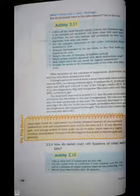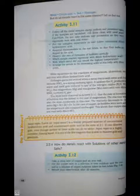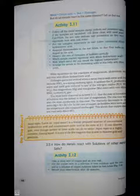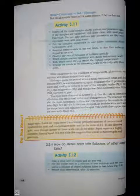Activity 3.11: Collect all the metal samples except sodium and potassium. If the samples are tarnished, rub them clean with sandpaper. Caution! Do not take sodium and potassium as they react vigorously even with cold water. Put the samples separately in test tubes containing dilute hydrochloric acid. Suspend thermometers in the test tubes so that their bulbs are dipped in the acid.